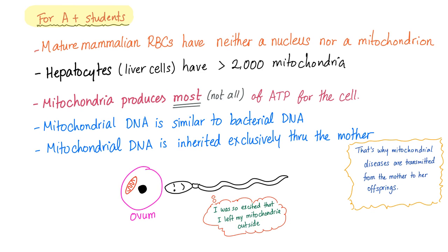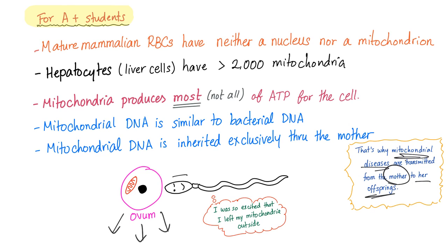Mitochondria produces most, but not all, of the ATP for the cell. Mitochondrial DNA is similar to bacterial DNA. Mitochondrial DNA is inherited exclusively through the mother — when fertilization occurs, the sperm leaves its mitochondria outside the ovum, entering only to contribute its nuclear genetic material. So the mitochondria passed down through generations comes only from the mother. That's why mitochondrial diseases are transmitted from mother to her offspring, not from the father.